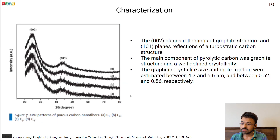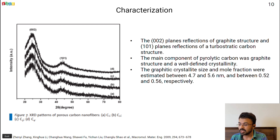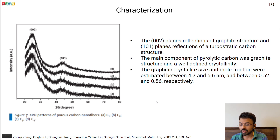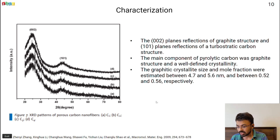Through XRD characterization, we find peaks at the 002 and 101 planes, indicating that the sample contains both graphite and turbostratic graphite structures. Through Raman spectroscopy, we find that the crystal size of these graphites is around 4.7 to 5.6 nanometers, and the mole fraction ranges from 0.52 to 0.56. This indicates a high content of crystalline structures, which increases the electrical conductivity.